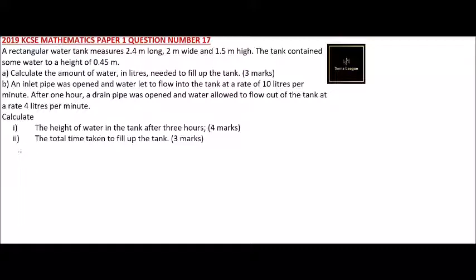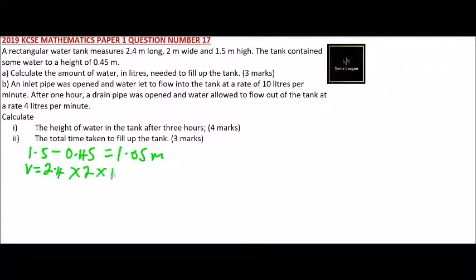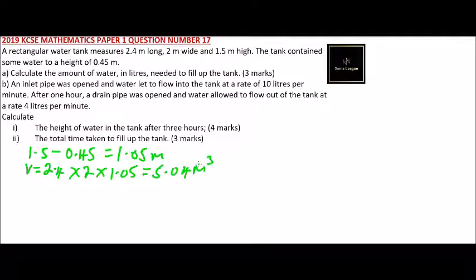Calculate the amount of water in liters needed to fill up the tank. Because the tank is 1.5 meters high, you minus the water level of 0.45 meters, and you get the remaining level of water as 1.05 meters. So the volume remaining to be filled is: Volume = 2.4 × 2 × 1.05 = 5.04 meters cubed.